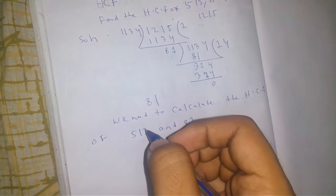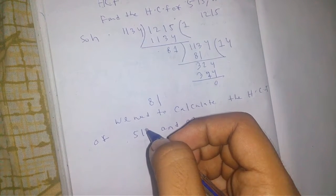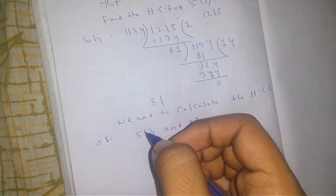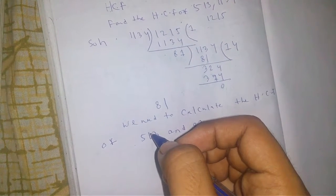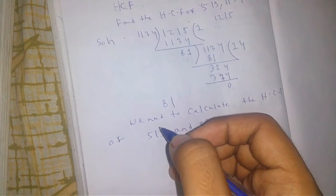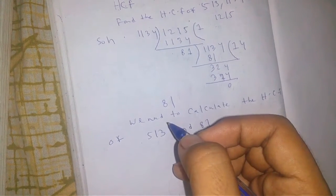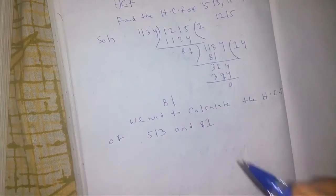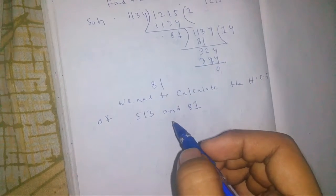In this procedure, we first calculate the HCF of the largest number and the next smaller number. Then we calculate the HCF of the remaining smaller number and the HCF we found from the previous two numbers. So here we have to find the HCF of 513 and 81.